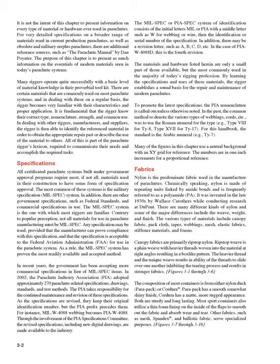Fabrics: Nylon is the predominant fabric used in the manufacture of parachutes. Chemically speaking, nylon is made of repeating units linked by amide bonds and is frequently referred to as a polyamide. It was invented in the late 1930s by Wallace Carothers while conducting research at DuPont. There are many different kinds of nylon, and some of the major differences include the weave, weight, and finish. The various types of materials include canopy fabric, pack cloth, tapes, webbings, mesh, elastic fabrics, stiffener materials, and foams.